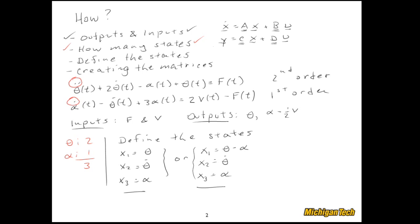If I develop the state space representation for these two different state definitions, I'll get two sets of A, B, C, and D matrices that in general could be different. However, the outputs will be the same and the dynamic transient characteristics of the system will be the same — they are two equivalent representations.